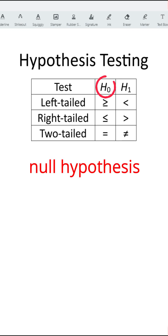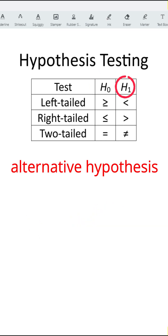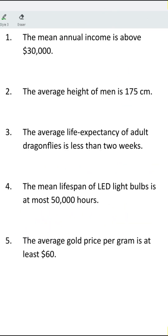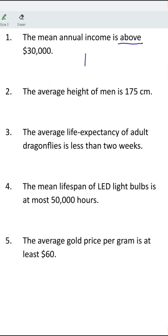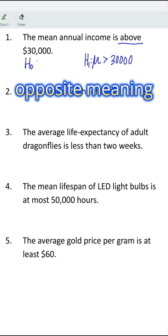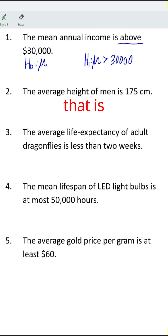Always bear in mind that the null hypothesis would always take the statement that has the meaning of equality, while the alternative hypothesis would take the opposite meaning. For example, 'the mean annual income is above' — since this has the meaning of inequality, we write it for the alternative hypothesis as mean greater than thirty thousand. This implies the null hypothesis has the opposite meaning: mean is less than or equal to thirty thousand.